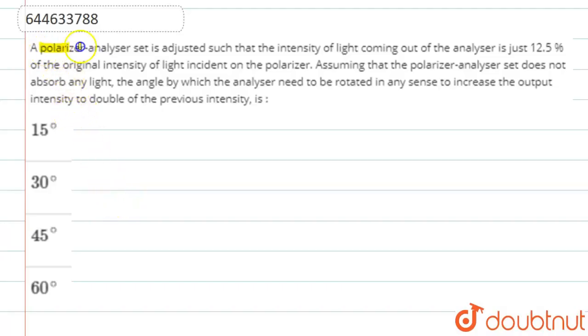A polarizer-analyzer set is adjusted such that the intensity of light coming out of the analyzer is just 12.5% of the original intensity.